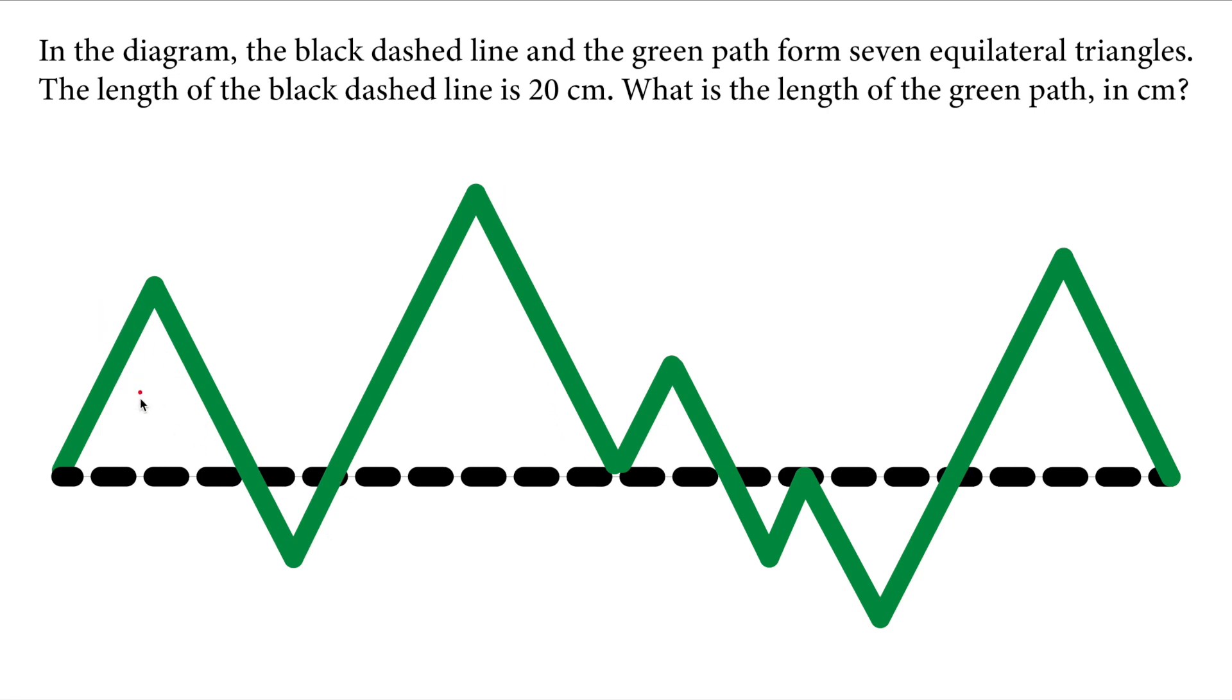Each triangle is an equilateral triangle. We realize that this length here is one third of the total perimeter of the triangle. The other side is also one third of the perimeter, and this side is one third as well. So this black line is actually the total sum of the one-third pieces from seven individual triangles.